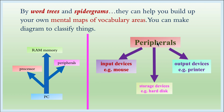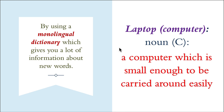Similarly, a spider gram for 'peripherals' can branch into: input devices (e.g., mouse), storage devices (e.g., hard disk), and output devices (e.g., printer). In this way we can also learn words and make learning new words more interesting and fascinating.